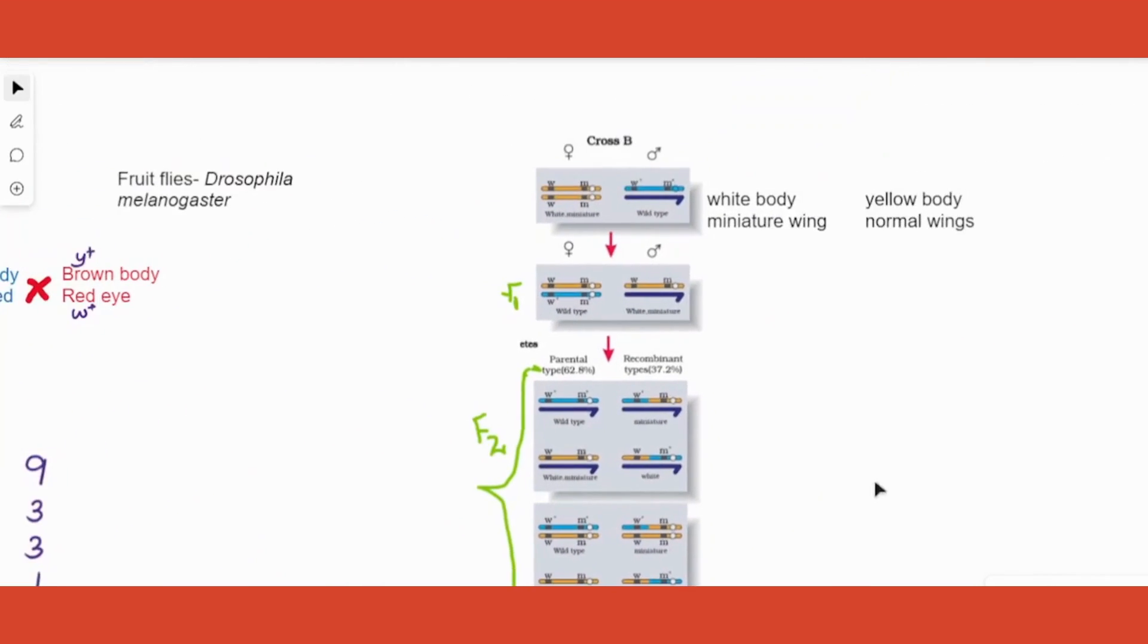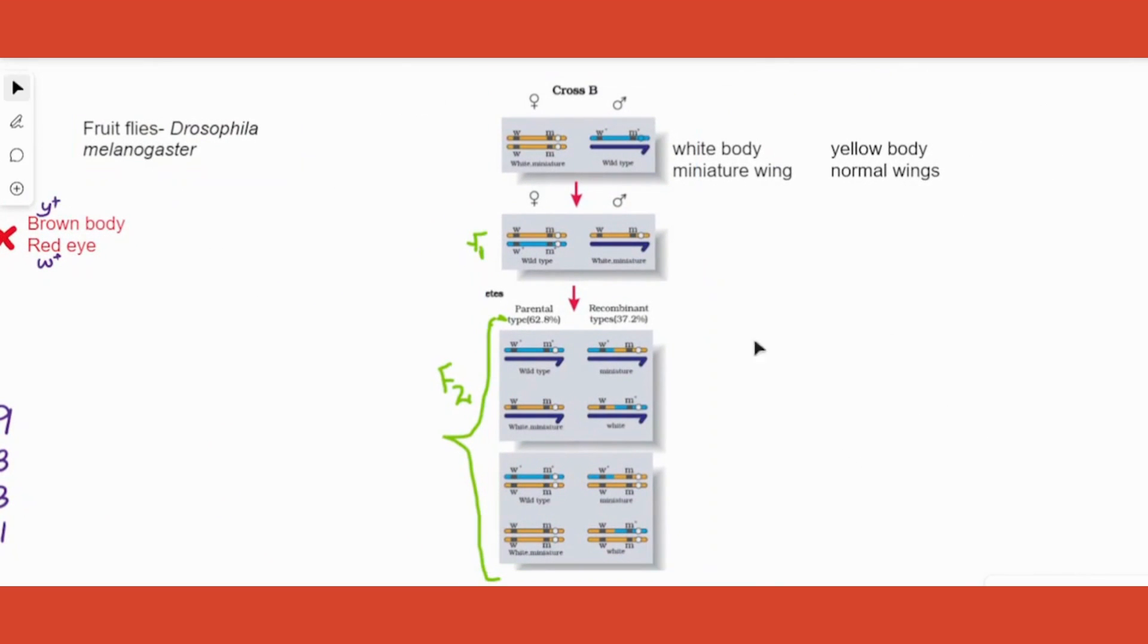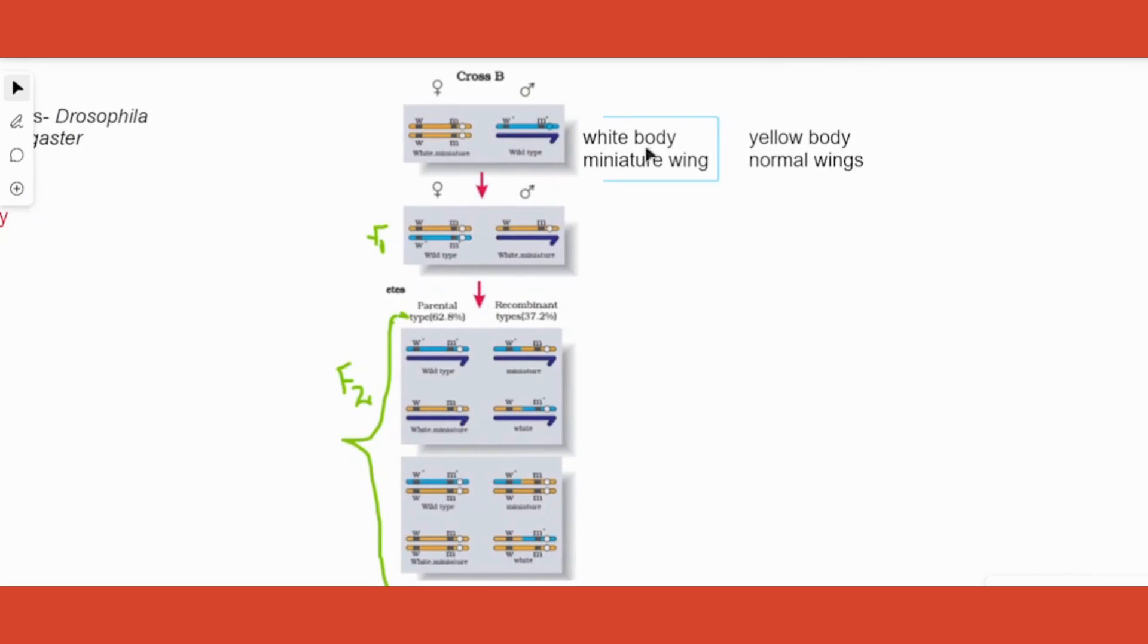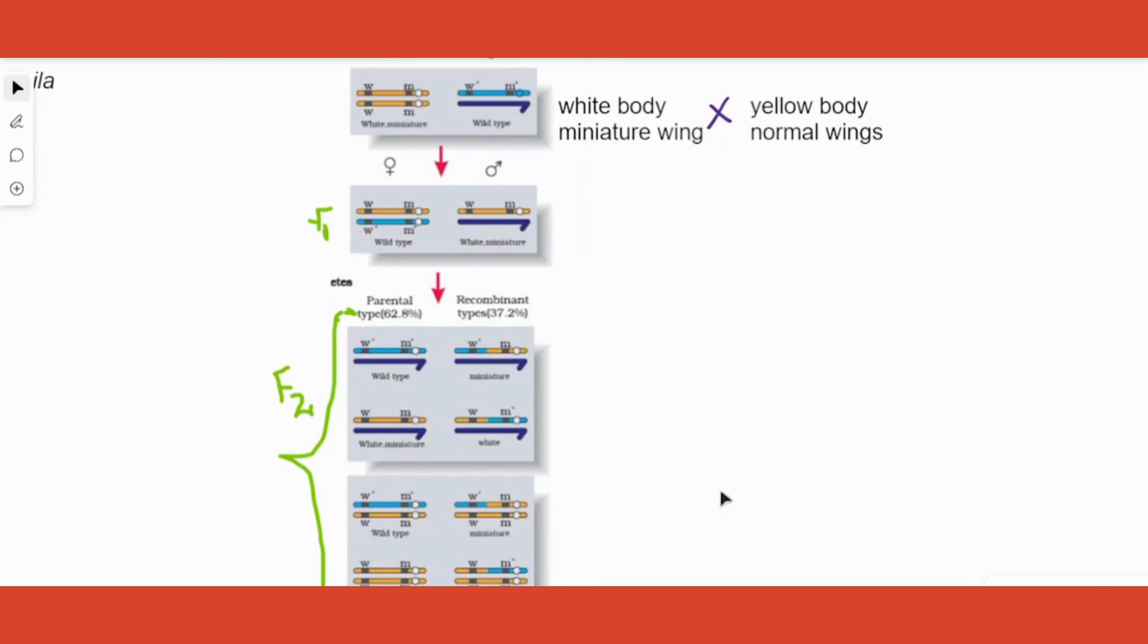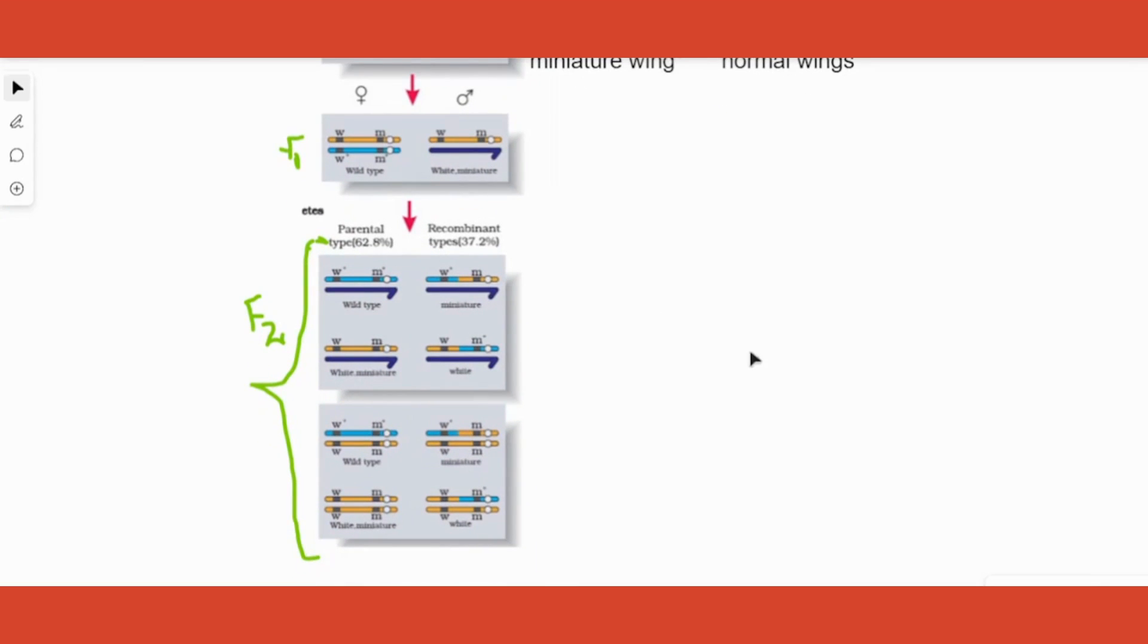Did Morgan stop there or did he continue? He definitely continued with another cross of a similar type, again with Drosophila melanogaster. The cross was with body color and wing shape - two characters again. In the F1, he expected the dominant trait to show up, but that's not what happened - he got both. In F2, he expected 9:3:3:1, but that also didn't happen. Instead, he got parental type more than recombinant type, but it was not 98:2 proportion. Here it was around 63% and 37%.